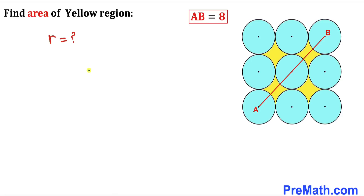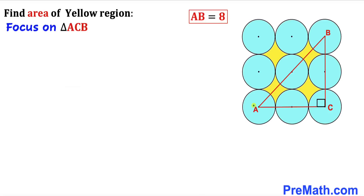Let's go ahead and get started. Here is our action plan: we are going to calculate the radius of each of these blue circles, and the only information given to us is that this AB length is 8 units. I have constructed a right triangle ACB by connecting the centers A, B, and C of these blue circles.